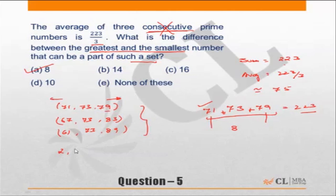The two smallest prime numbers are 2 and 3, and the third number then has to be 223 minus 2 plus 3, which is 5, giving 218. But 218 is not a prime number, so this combination is not possible.